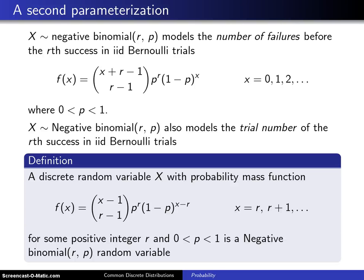As was the case with the geometric distribution, there is also a second parameterization for the negative binomial distribution. Here is a summary of what we've seen so far.